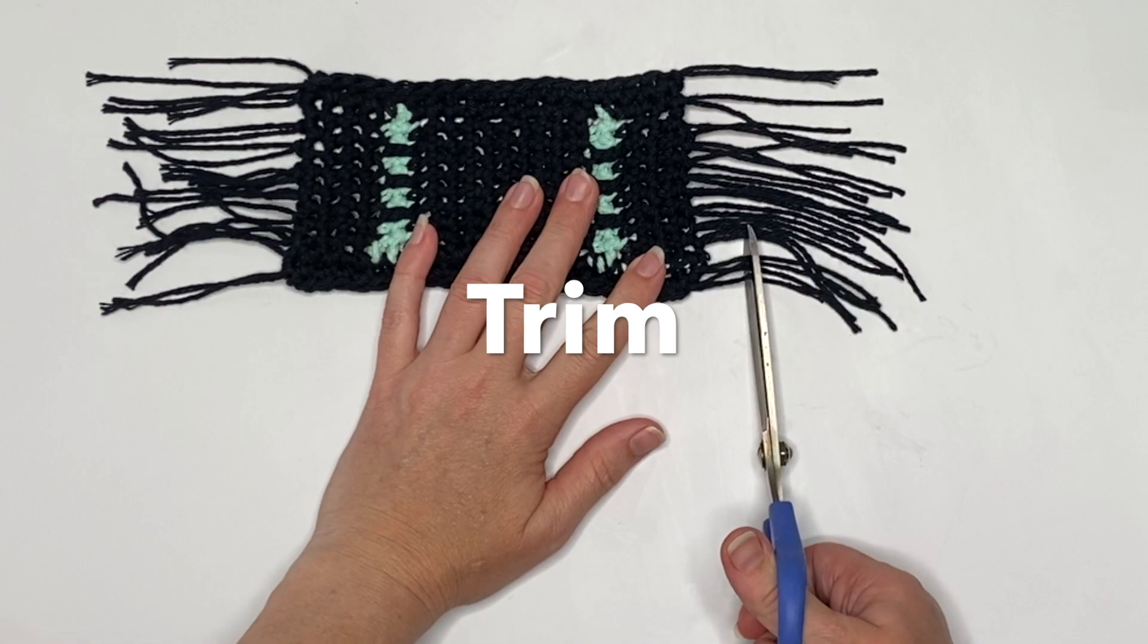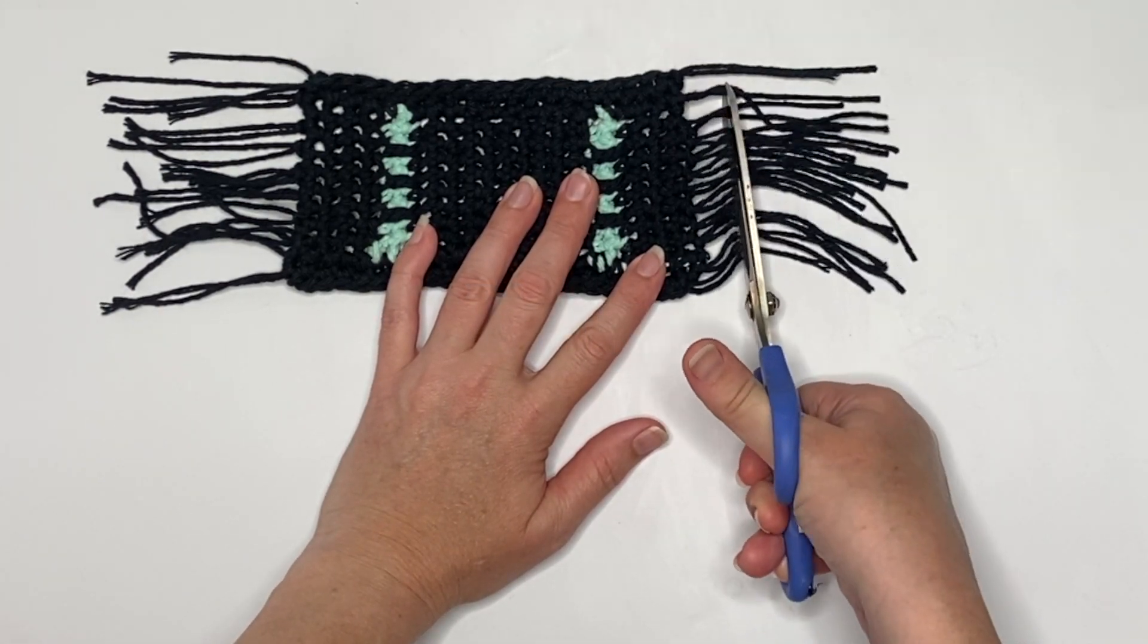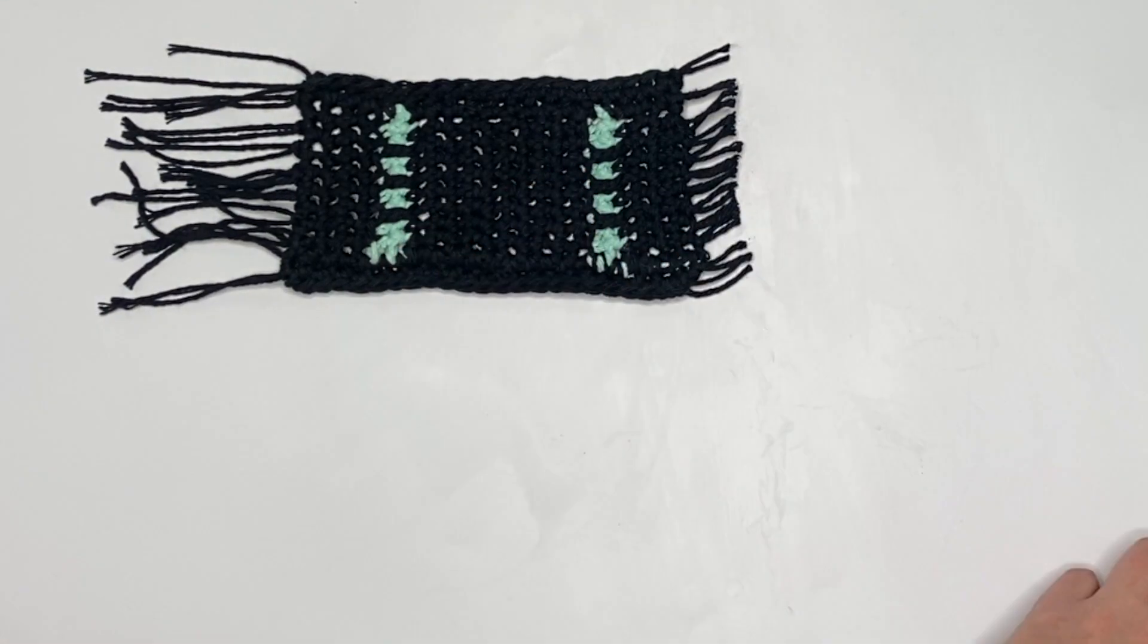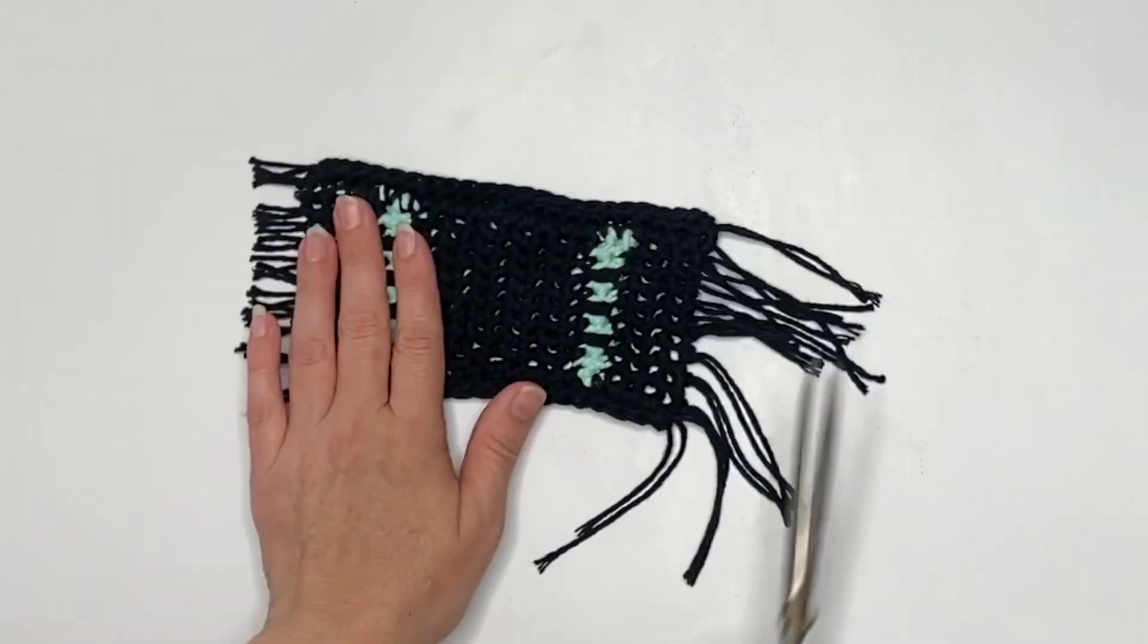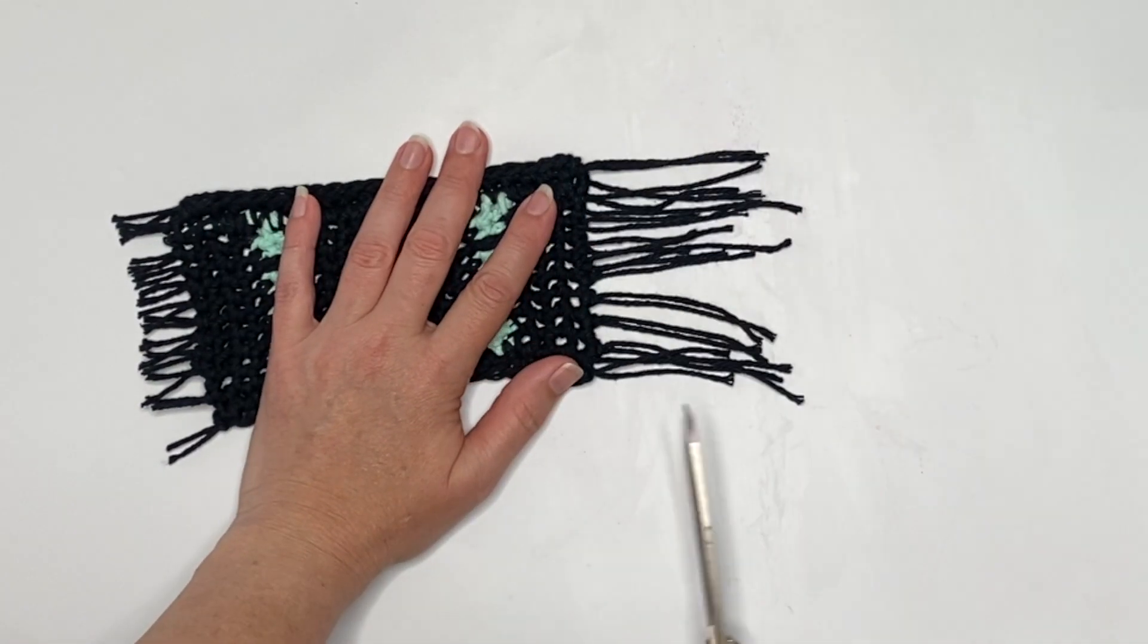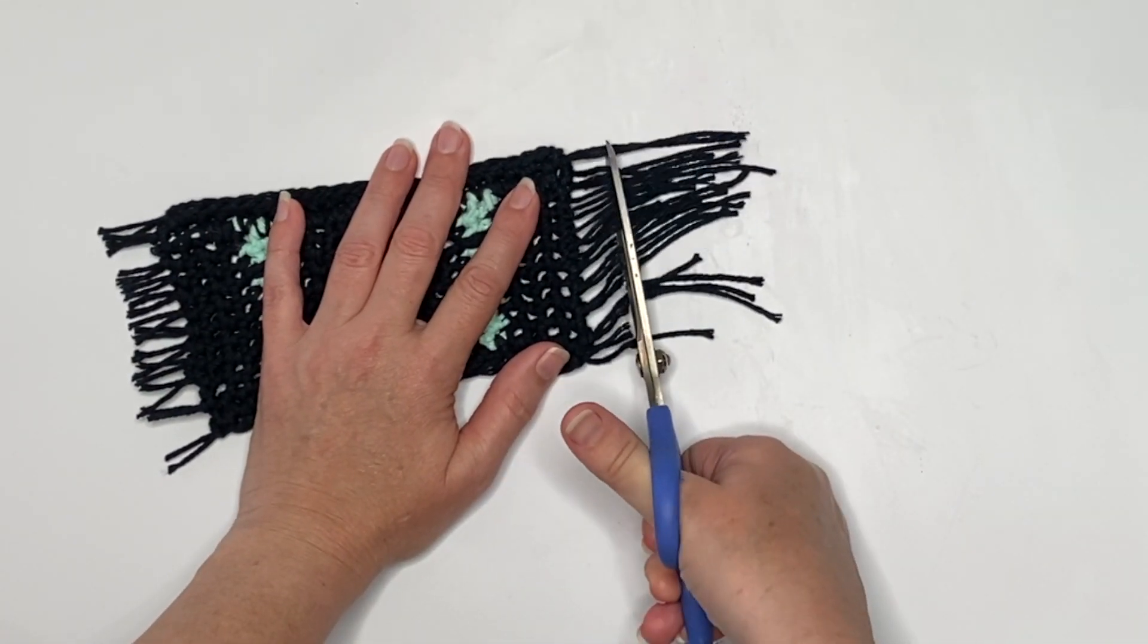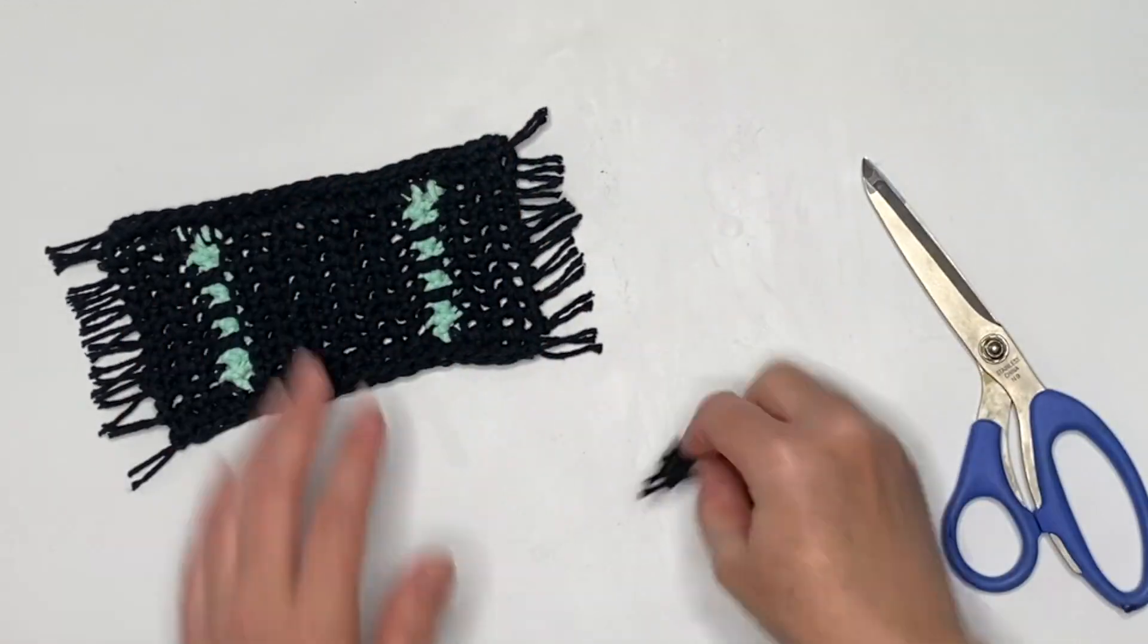Once you get the tassels on, trim them to the length you desire. It's easier to do that on a flat surface. Brush them out nice and neat before you cut them so that they're all the same length. And with that, you're done.